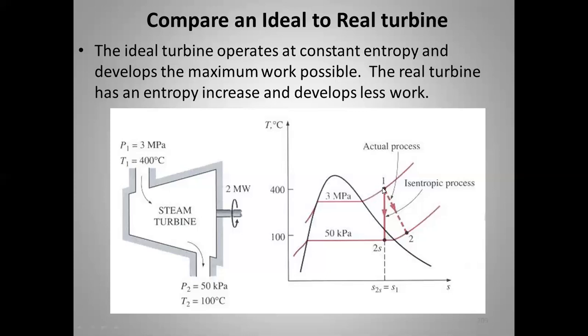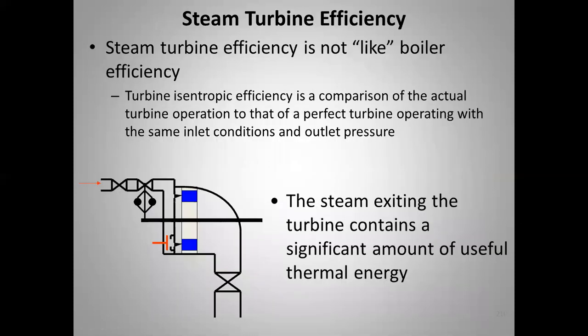The change in enthalpy is less for the real turbine than for the isentropic turbine, and that ratio is the isentropic efficiency. The isentropic turbine efficiency is a comparison between a real operating turbine and an ideal turbine — how closely the real turbine can approach ideal performance, defined as operating at constant entropy.